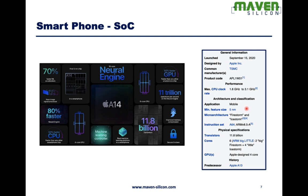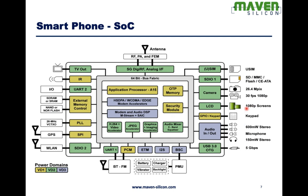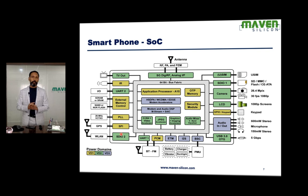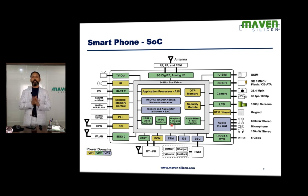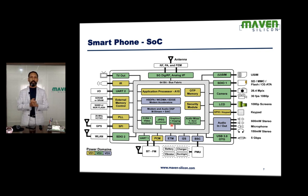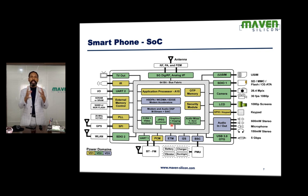Now let's see how we design this kind of complex SOC. If you consider any mobile SOC, this is how it would look like. This kind of SOC will have different kinds of IPs — primarily two kinds. One is the processor IP. We use different kinds of processors like CPUs, GPUs, DSPs, application processors, video accelerators, and AI accelerators. We put all these processors and accelerators together to build the engine.